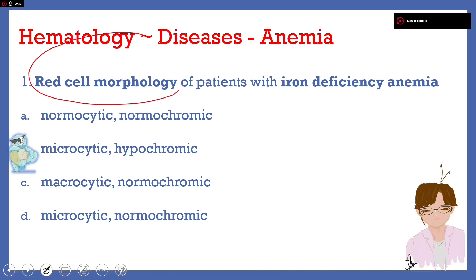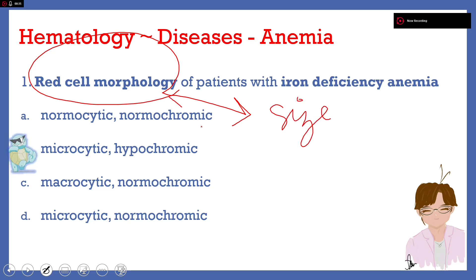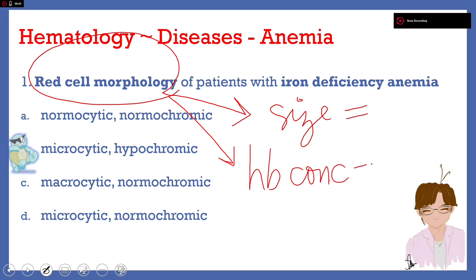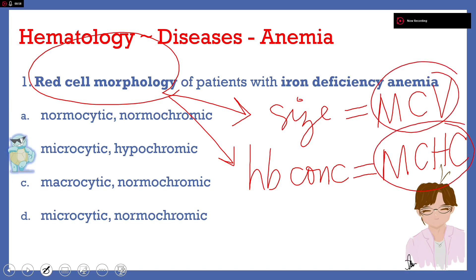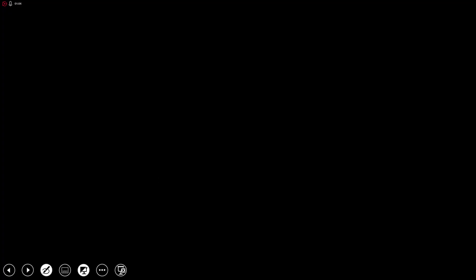When we talk about red cell morphology, we are referring to its size and also the color as shown by the hemoglobin concentration. The size and hemoglobin concentration will depend on the RBC's MCV and MCHC. These are both part of the RBC indices and are used to classify our anemias morphologically. Using them, we can have three classifications.